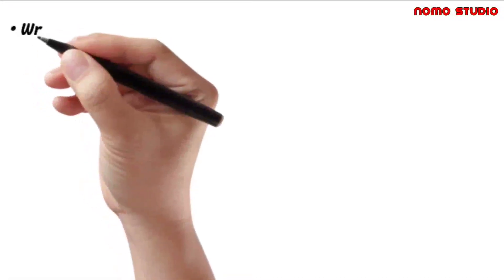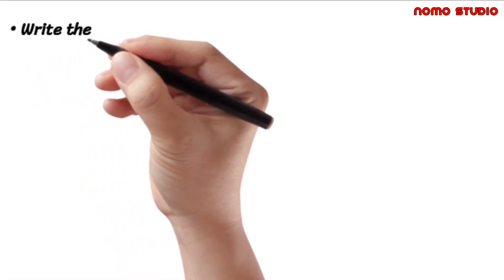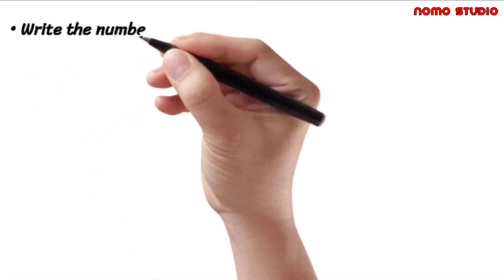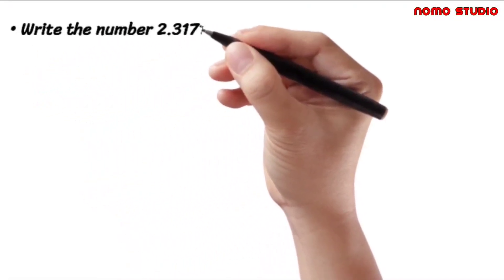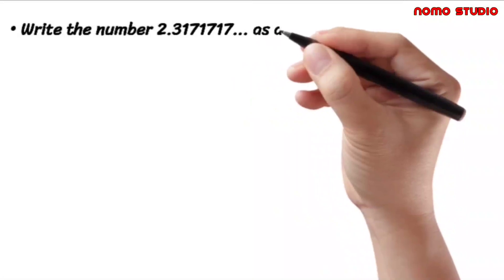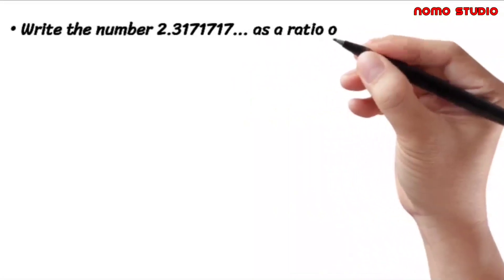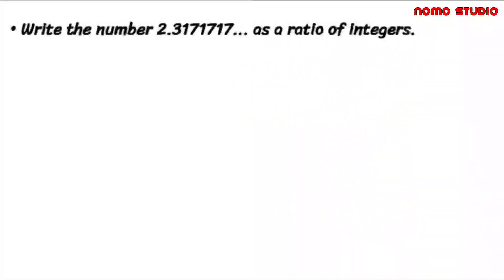Let's understand how repeating decimals can be expressed as a ratio of integers — that means we will convert repeating decimals to their fractional form. Please be reminded that this solution I will show will only apply to a repeating decimal.